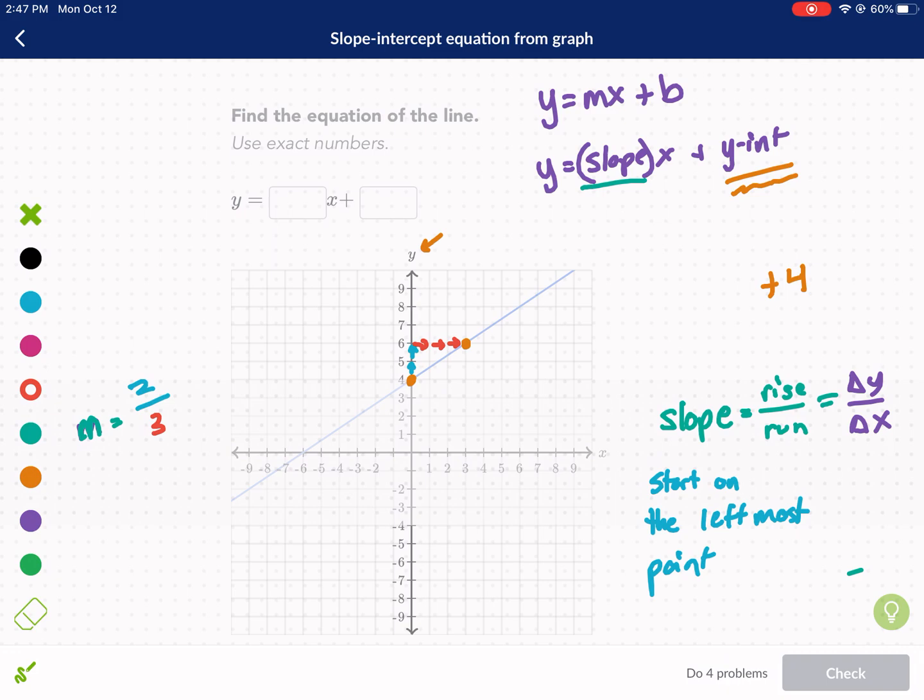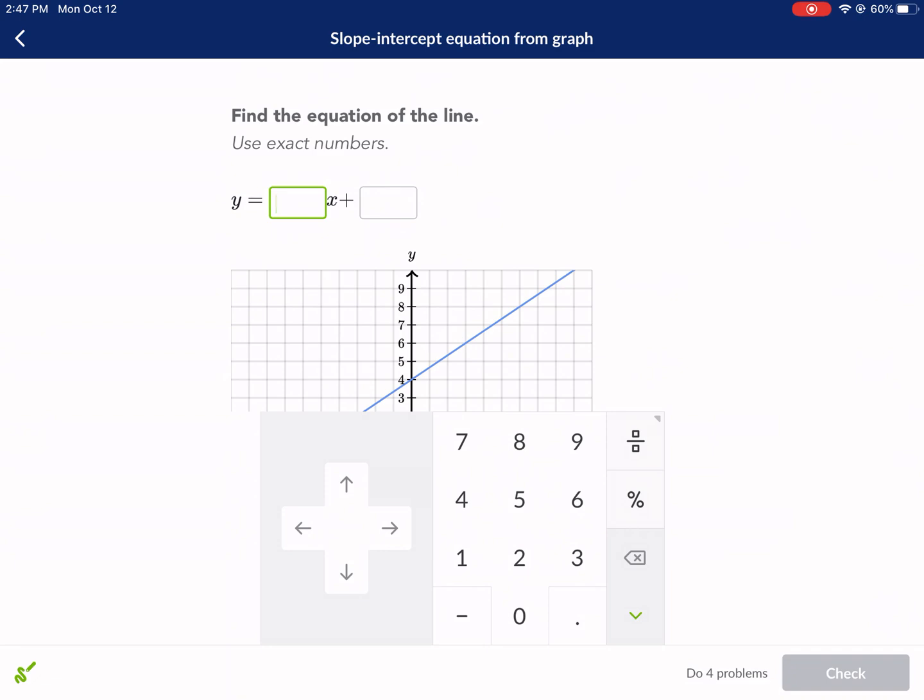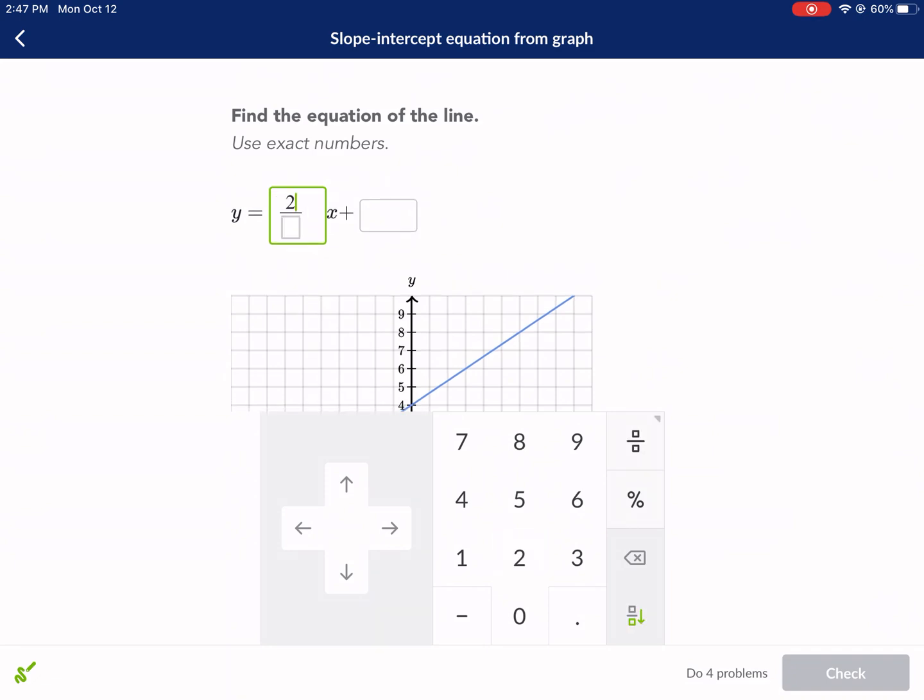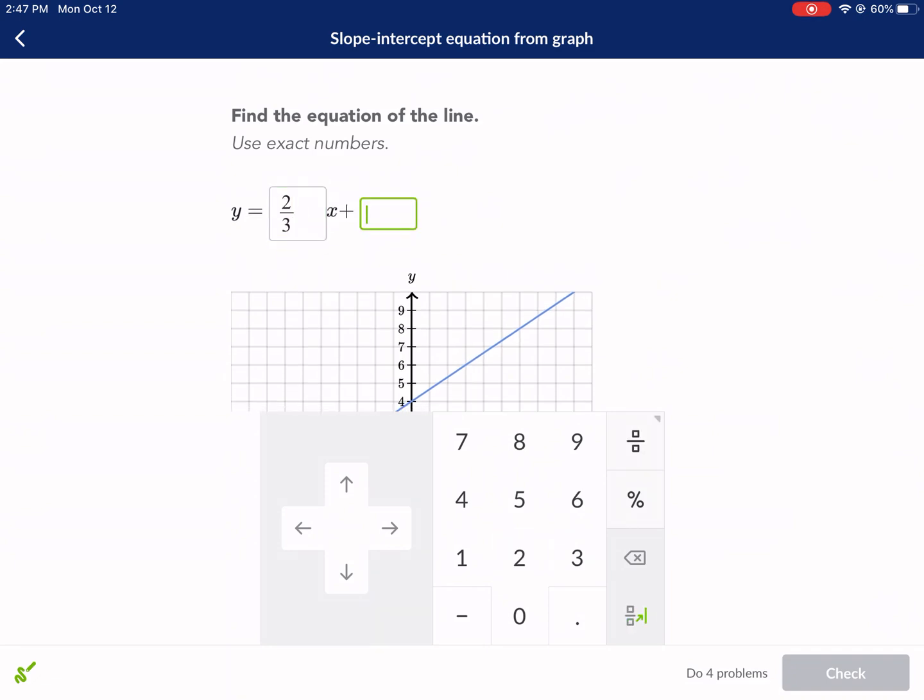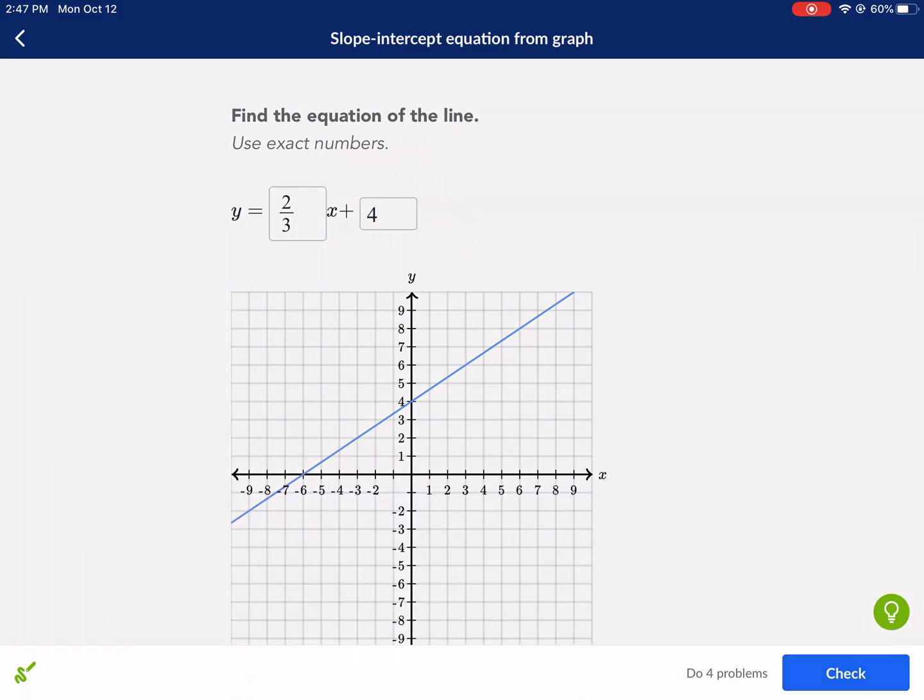So my final equation is going to look like this. Let me make it a, I'll just use green. Why not? 2 over 3 was my slope. This is my x. And this is equal to my y. Y equals 2 thirds x plus 4. So we're going to type that in. So make it into a fraction. 2 over 3 plus 4. Let's check it. All right. Great.